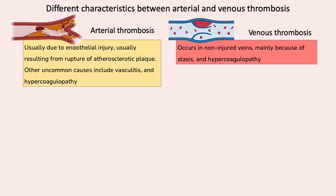On the other hand, venous thrombosis is more commonly seen in normal, non-injured veins, mainly due to stasis. Hypercoagulability is another cause for venous thrombosis.